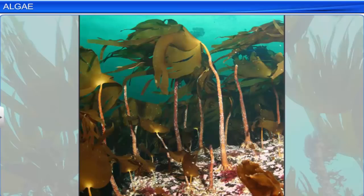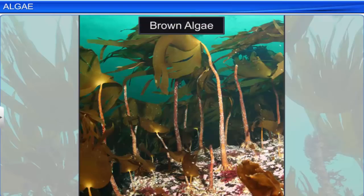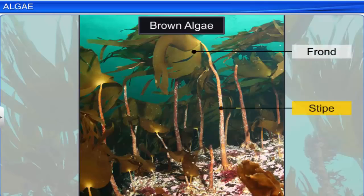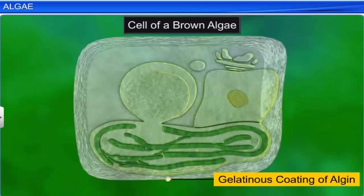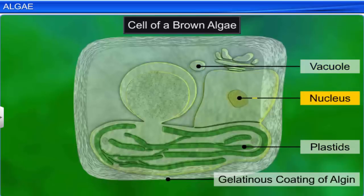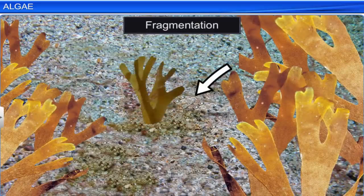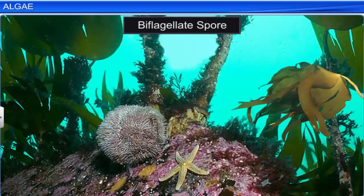The body structure and cellular structure of brown algae: the plant body consists of a frond, a leaf-like photosynthetic organ, and a stipe that functions as a stalk. The frond and stipe are attached to the substratum by a holdfast. The vegetative cells of brown algae have a cellulosic wall, which usually has an outer gelatinous coating of algin. The protoplast inside the cell has plastids and a centrally located vacuole and nucleus.